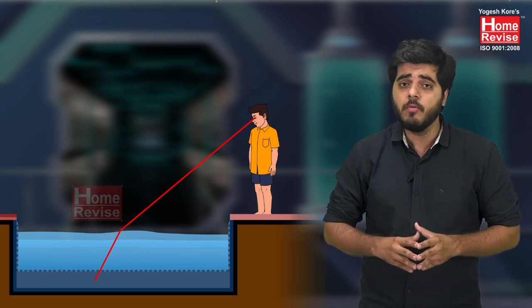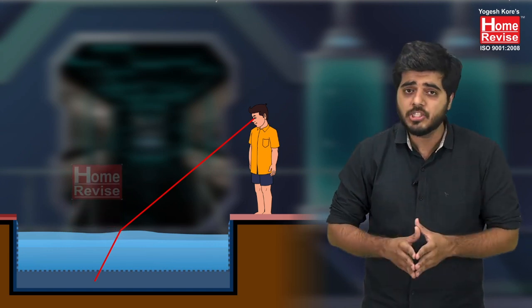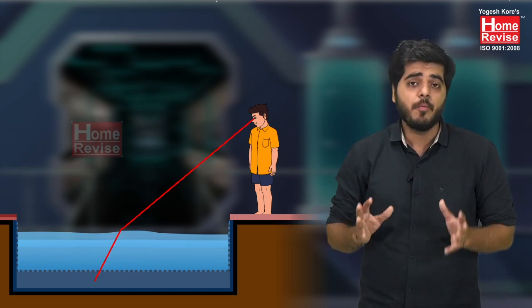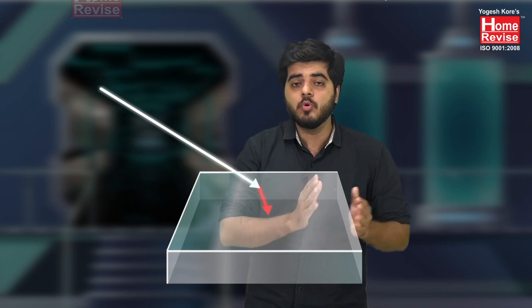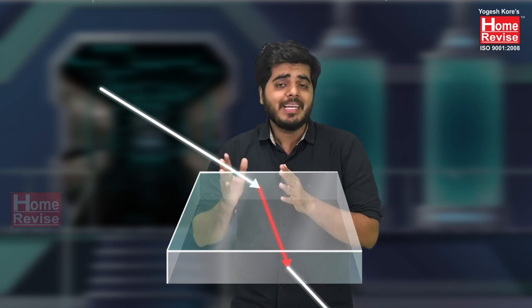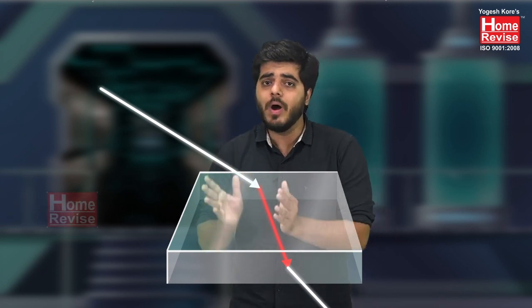In today's session we are going to learn what we understand by refraction and how exactly it happens — how it alters the way we see things. The basic definition of refraction of light is: the bending of light when it travels from one transparent medium to another transparent medium is called refraction of light.